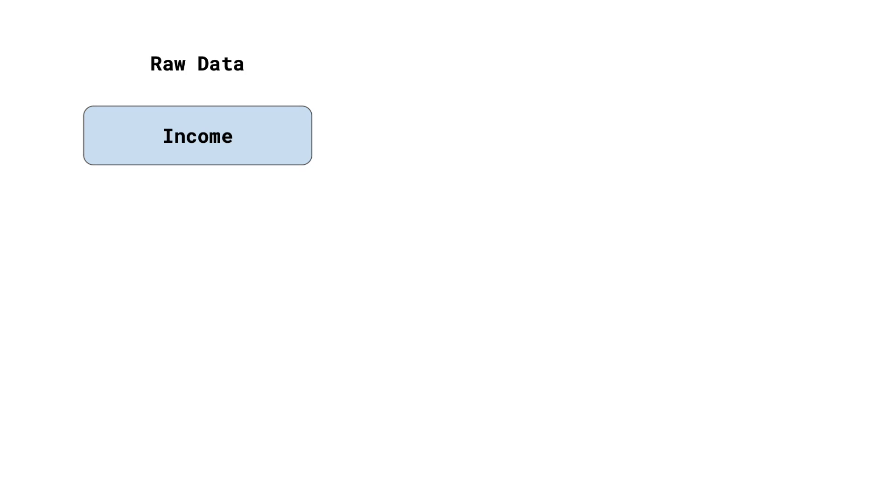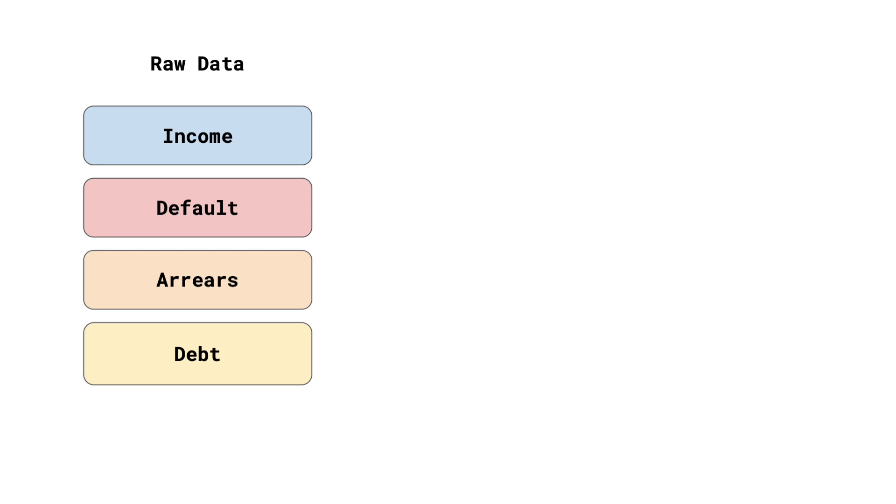This is because the full list will contain both redundant and irrelevant features. Redundant features are two or more features that capture the same relationship. To better understand this, suppose you want to create a model to predict if someone will default on a car loan. Let's assume for each customer, we have access to data on monthly income, default and arrears history, existing debt obligations, and some personal information.